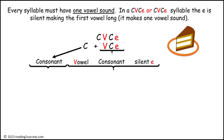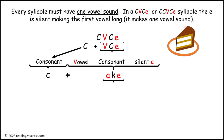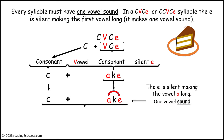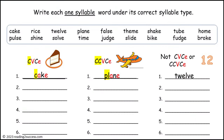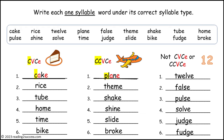With kids, review what the CVC silent E syllable is — the letters it represents and how the silent E makes the first vowel long, together making one vowel sound, to form the one-syllable word cake. Have kids write each one-syllable word under its correct syllable type. Column three is for words that do not fit CVC E or CCVC E patterns. This is the completed practice page.